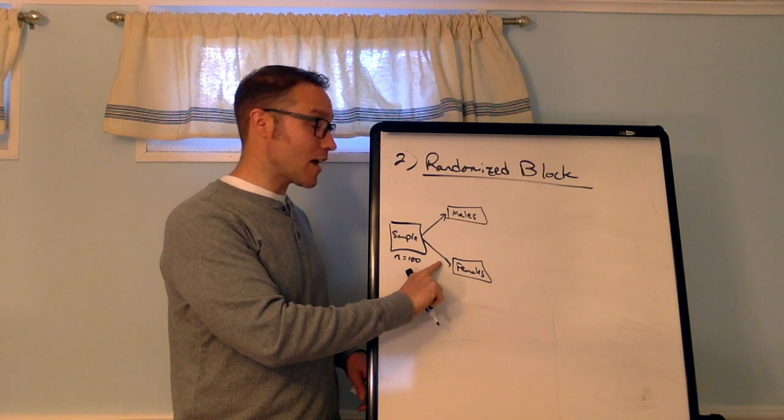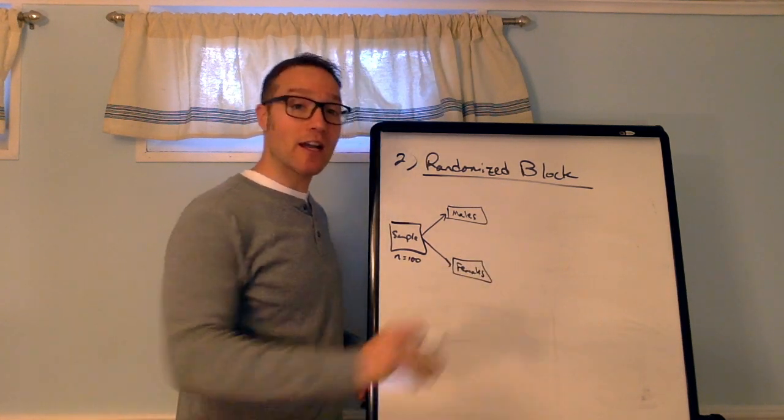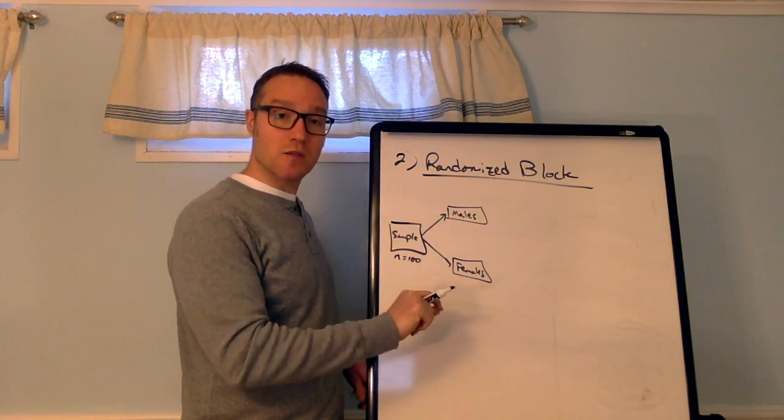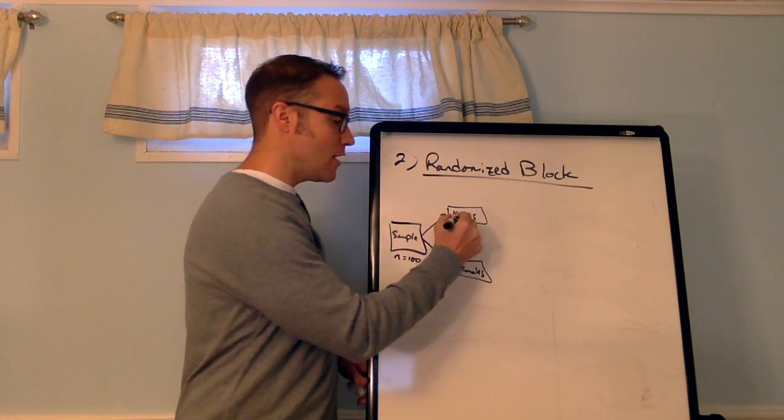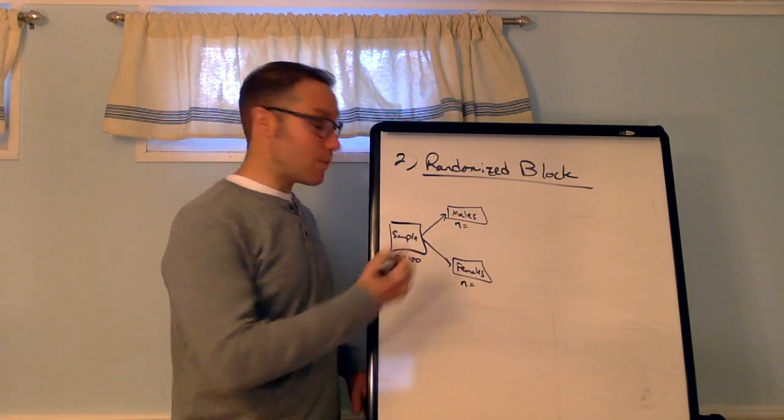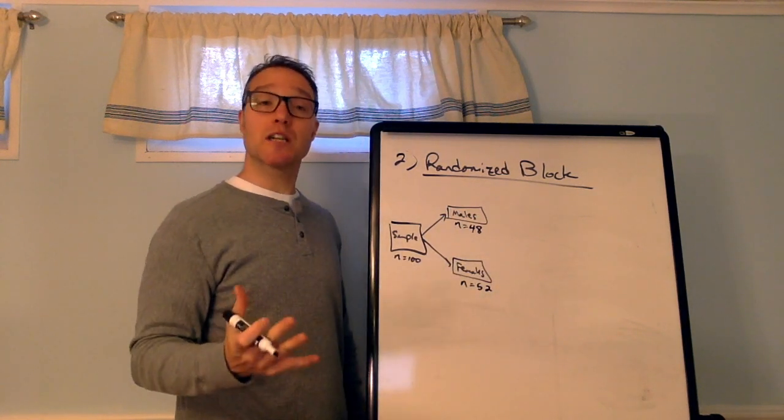So, I did not use random assignment to say, okay, I randomly selected you to be a male and you're going to be a female, right? I'm splitting them based on a property that is inherent to the participants non-randomly. So, it's less likely that these are going to be the same number. Maybe I have 48 and 52. I'd like them to be close.